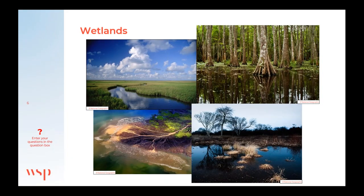In 1987, the Danish government started introducing plans to reduce the amount of nitrogen and phosphorus that ends up in the lakes and the coastal waters. Through the years, wetlands started playing a major role in cleaning the water.